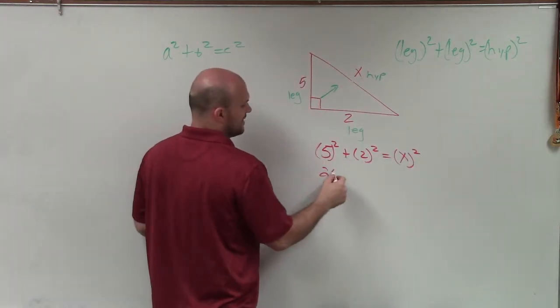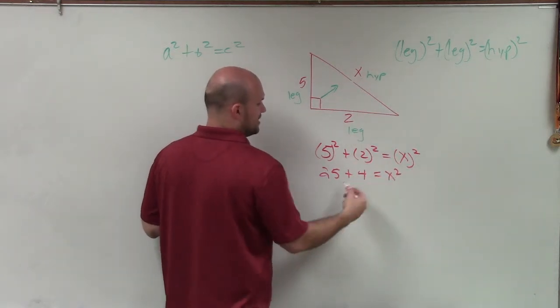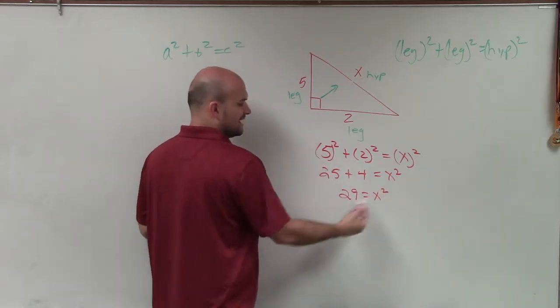That becomes 29 equals x squared. To solve for x, I need to take the square root of both sides.